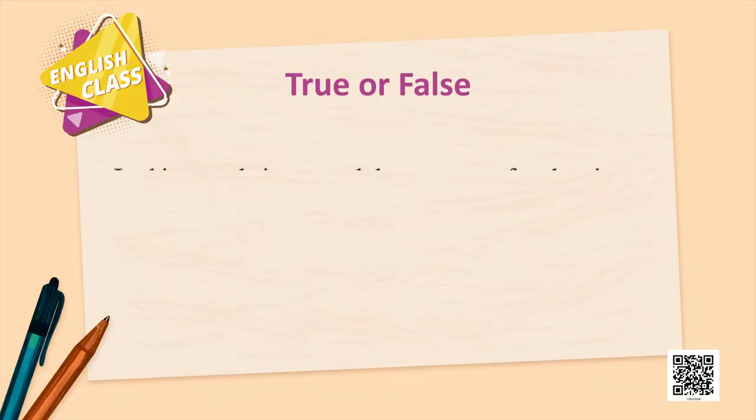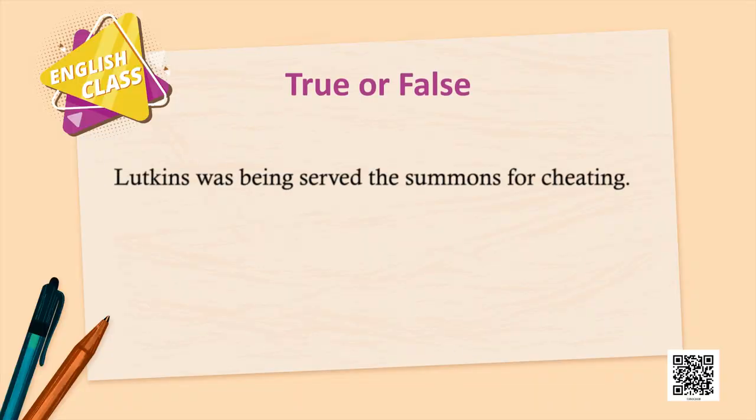Now let us move on to the second one. 'Lutkins was being served summons for cheating.' True or false? This is true. Wrong — he was being served summons to appear as a key witness. Let us be very careful with the details.